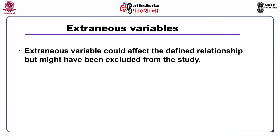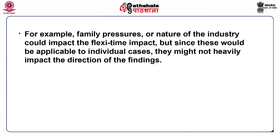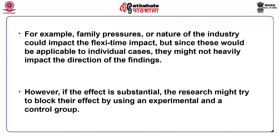Extraneous variables could affect the defined relationship but might have been excluded from the study. This would most often account for the chance variation observed in the research investigation. For example, family pressures or the nature of the industry could impact the flexi-time effect, but since these would be applicable to individual cases, they might not heavily impact the direction of the findings. However, if the effect is substantial, the researcher might try to block their effect by using an experimental and a control group.